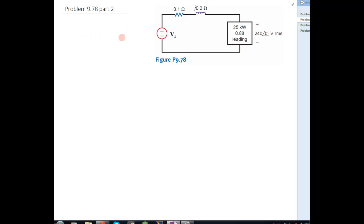So the first thing we're going to do is find the current through this thing. We know that P equals Vrms times Irms times the power factor, which is cosine of theta V minus theta I. Right off the bat, we can solve for Irms. Since we know we have 25,000 watts over 240 volts times 0.88, this comes out to 118.4.